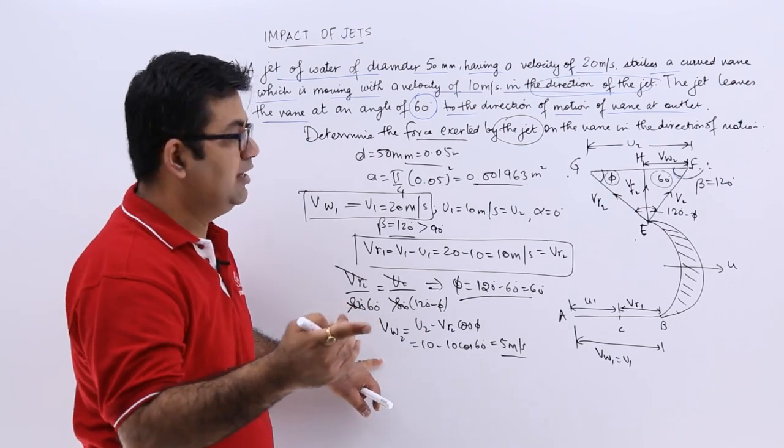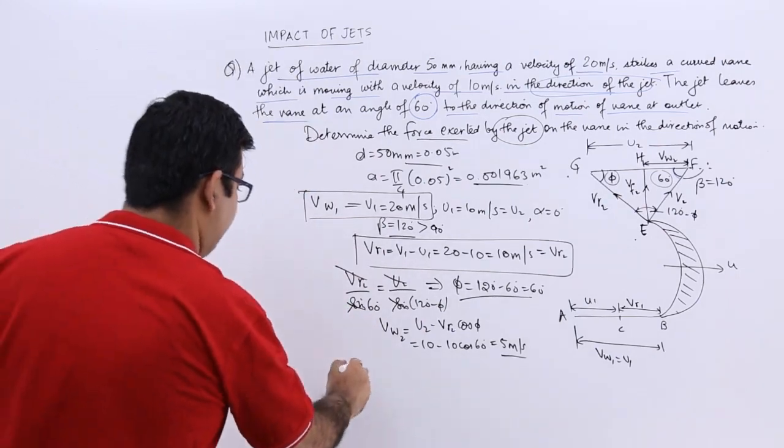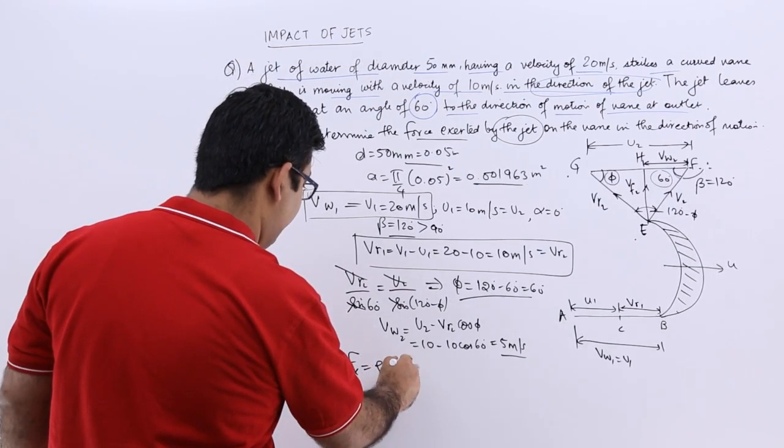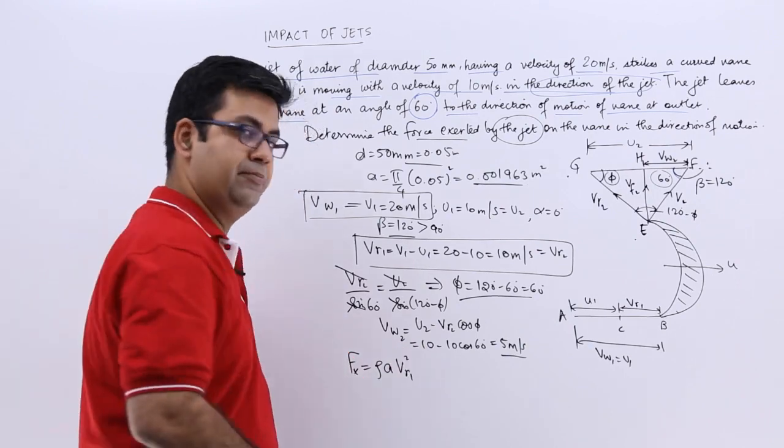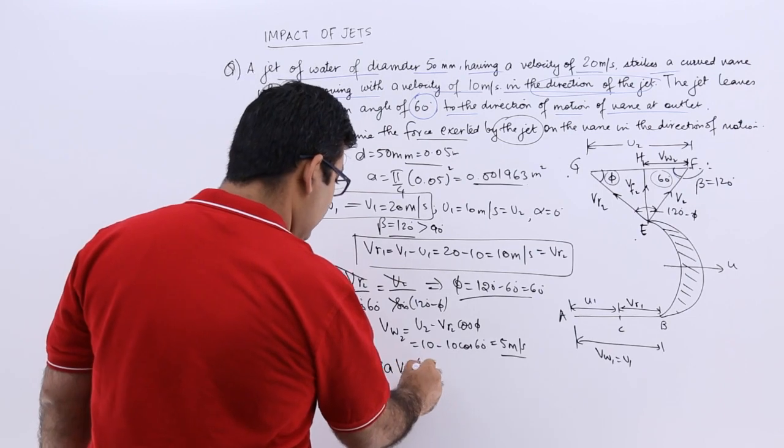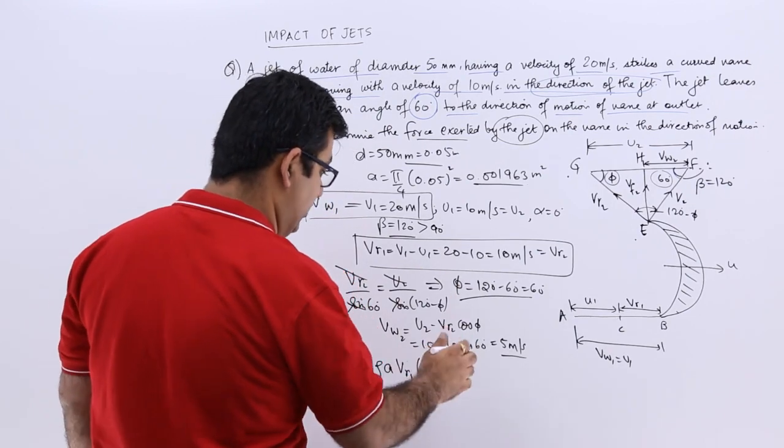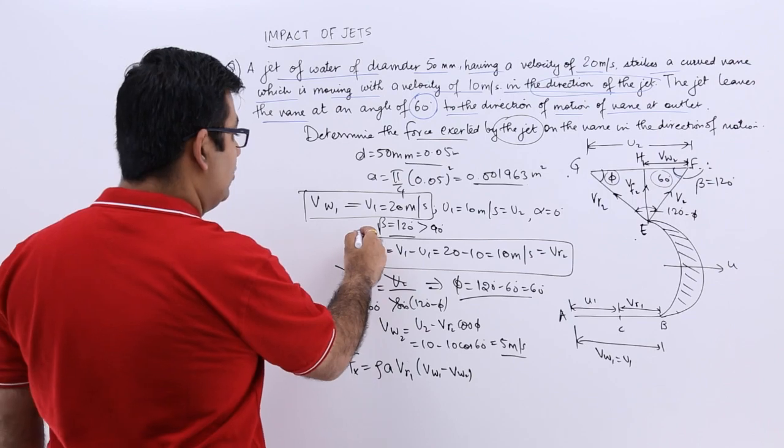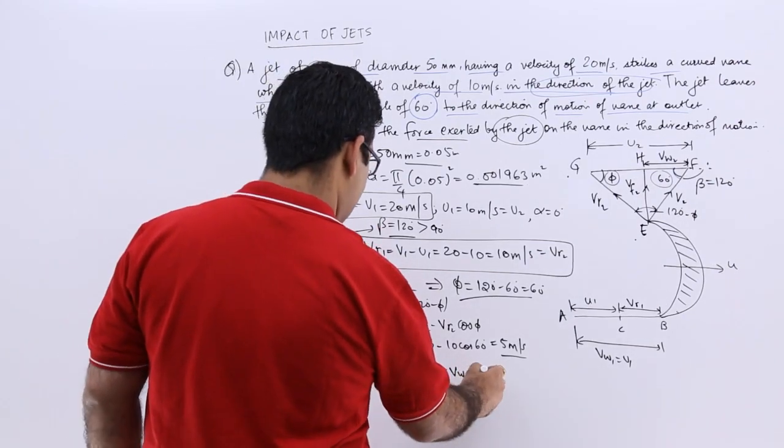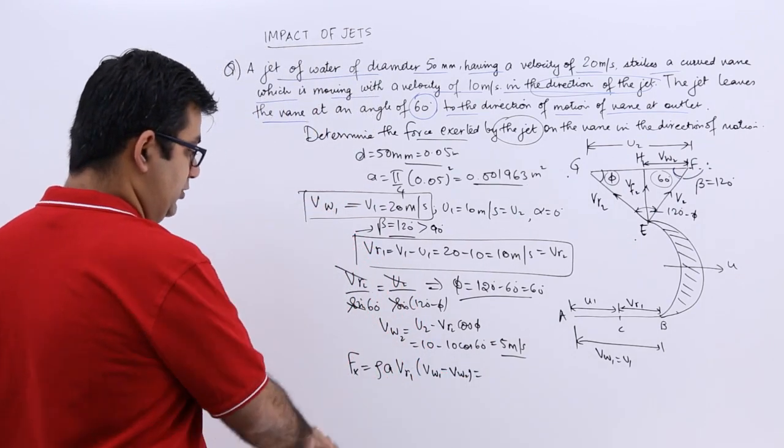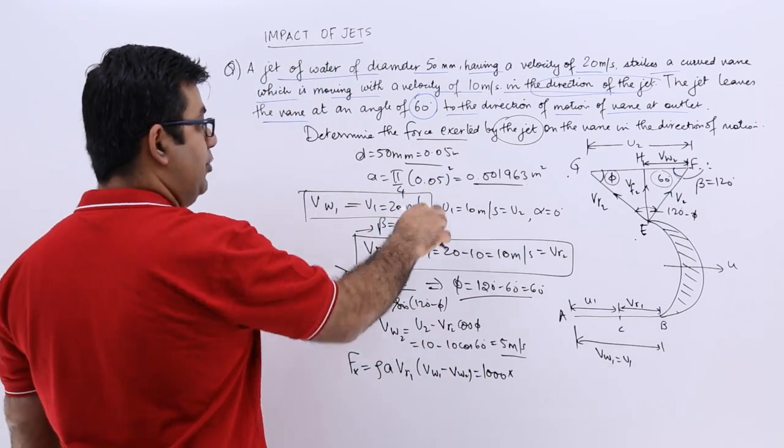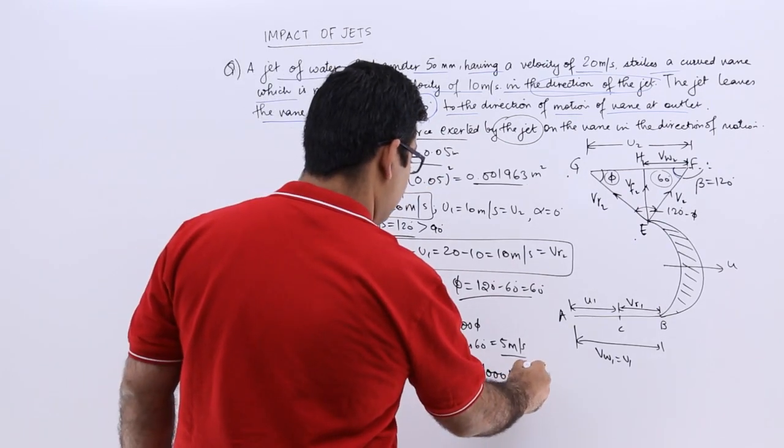Now if you find out the value of force exerted, force exerted can be found out in the direction of the motion as rho a vr1 into vw1 minus vw2, not plus, because your beta is obtuse. This would be your value. So you put in the respective numbers. So rho is 1000 because we are using water. The value of A is 0.001963.